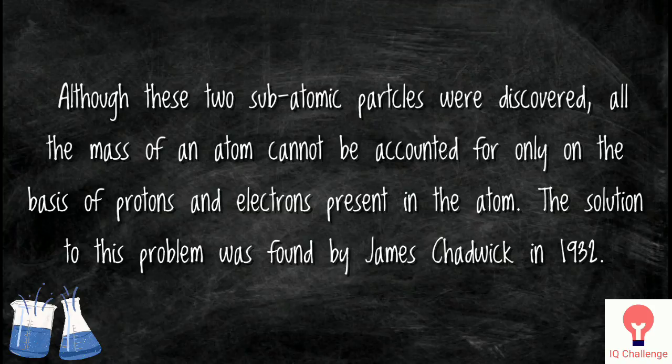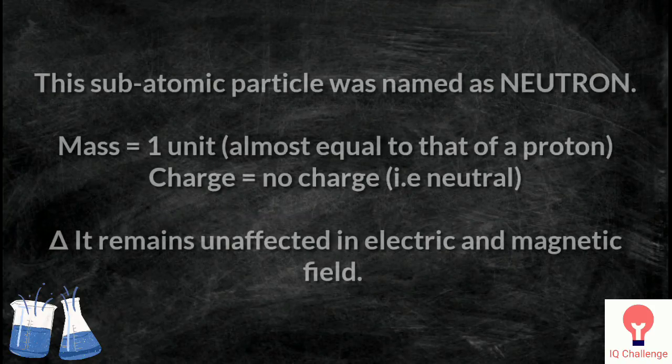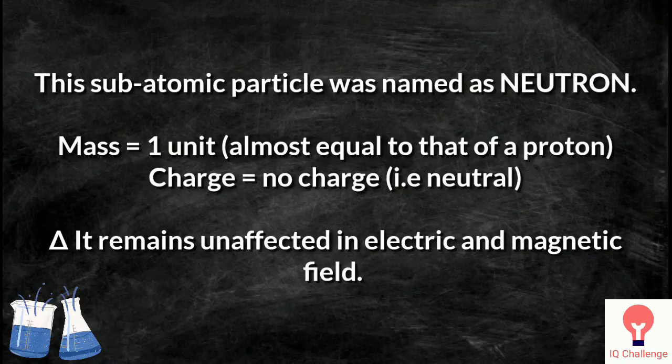Although these two subatomic particles were discovered, all the mass of an atom cannot be accounted for only on the basis of protons and electrons present in the atom. The solution to this problem was found by James Chadwick in 1932. This subatomic particle was named as neutron.